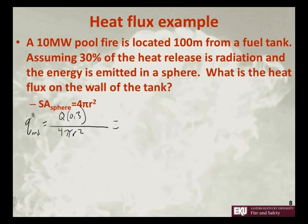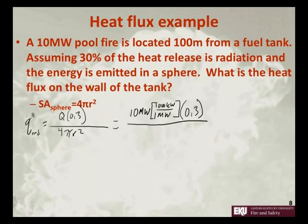This is equal to 10 megawatts, which 1 megawatt is 1,000 kilowatts, and we want to input our heat release rate in terms of kilowatts, times 0.3 divided by 4 pi times 100 squared.